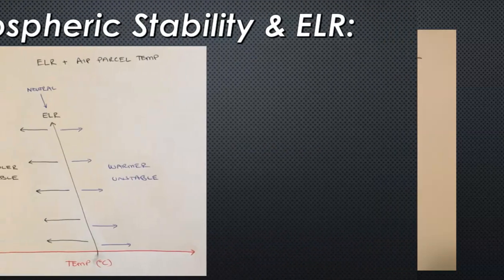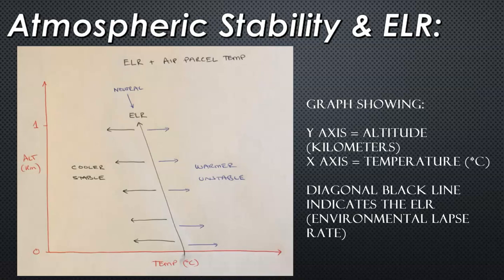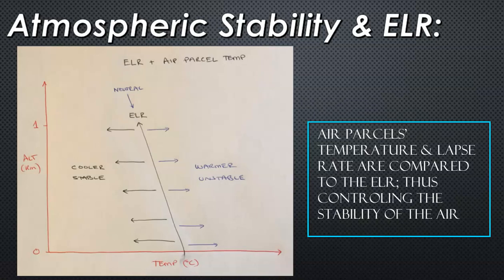This diagram looks at atmospheric stability combined with the environmental lapse rate. On the diagram, the y-axis shows altitude in one-kilometer or 1,000-meter increments, and the x-axis shows temperature in degrees Celsius. The diagonal black line represents the ELR. If the air parcel decreases in temperature at the same lapse rate as the ELR, it would represent a neutral atmosphere.